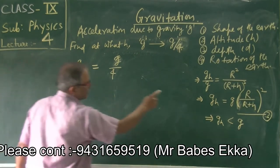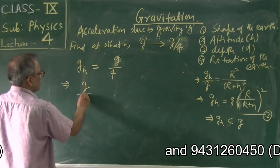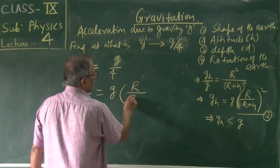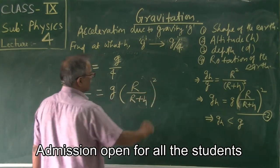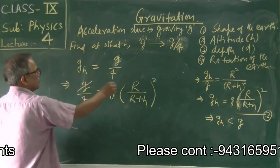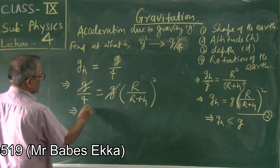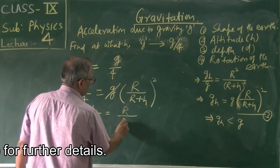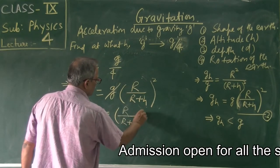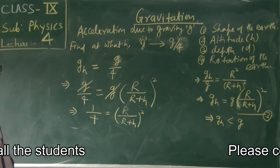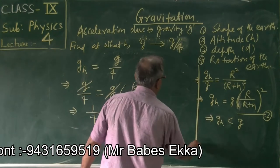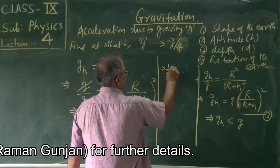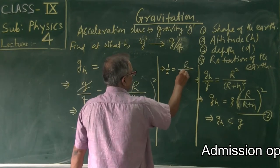Using equation 3, in place of g_h we substitute g by 4: g by 4 equals g into r square by r plus h whole square. Taking the square root of both sides, we get 1 by 2 equals r by r plus h.